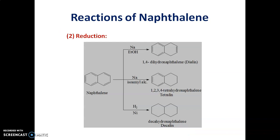Next is reduction of naphthalene. Naphthalene undergoes reduction more readily than benzene. Naphthalene on reduction with sodium and ethyl alcohol gives 1,4-dialene which is also called as 1,4-dihydronaphthalene. Naphthalene on further treatment with sodium and isopentanol at 130 degree Celsius,